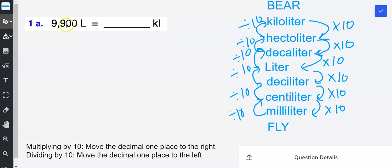So now I'm going to go ahead and focus on the example that I have. 1a, the example is 9,900 liters is equal to how many kiloliters? So I'm moving from liters to kiloliters. So liters is the smaller unit of measure and kiloliters is the larger unit of measure. So I'm going from the fly to the bear, so I'm going to share which means I'm going to divide.